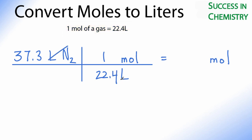When I do the math, see my liters are going to cancel out, I'll be left with moles. So 37.3 times 1, which I'll then divide by 22.4, and that'll give me 1.5 moles of nitrogen gas.